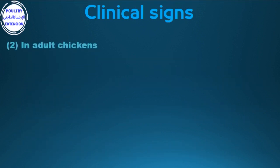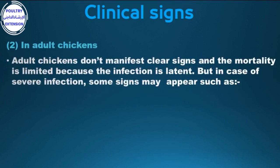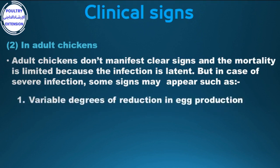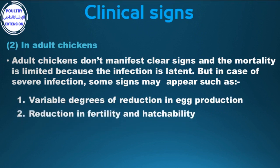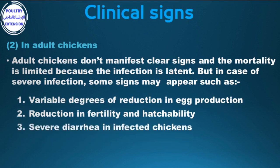In adult chickens, they do not manifest obvious signs and mortality is limited because the infection is latent. But in cases of severe infection, some signs may appear such as: 1. Variable degrees of reduction in egg production. 2. Reduction in fertility and hatchability. 3. Severe diarrhea in affected chickens. 4. Fever in infected chickens.